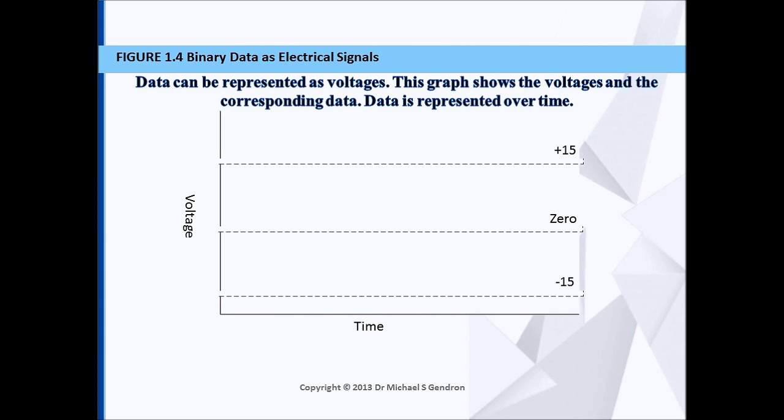With the graph in place, we see voltages on the vertical axis and time on the horizontal axis. We see lines marking plus 15, zero, and minus 15, so we can show how in this encoding scheme ones and zeros are encoded.